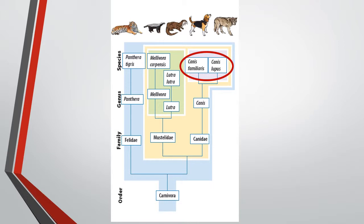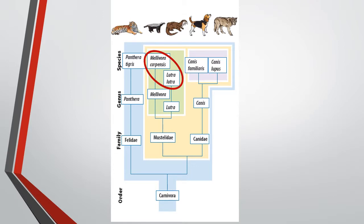These two, at the ends of these branches, are more closely related to each other than these, which are further away from each other on the cladogram. Even though these may look like they should be closely related, they really aren't, because one is in the blue clade and the other is in the green clade.